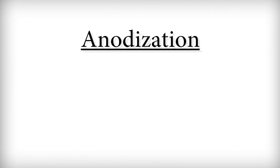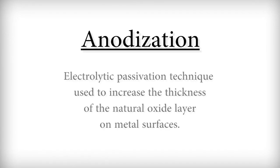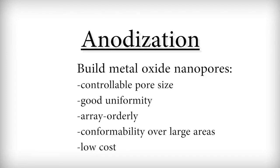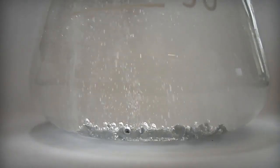Now I want to talk about anodization. Anodization is an electrolytic passivation technique used to increase the thickness of the natural oxide layer on metal surfaces. The anodizing approach is able to build metal oxide nanopores of controllable pore size, good uniformity, array orderliness, and conformability over large areas at low cost via a simple electrochemical experimental procedure.